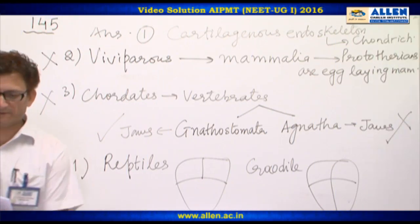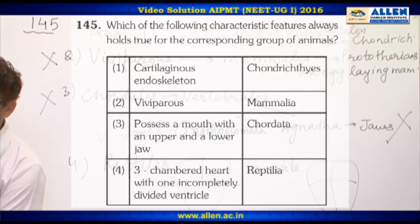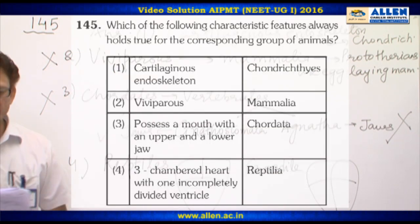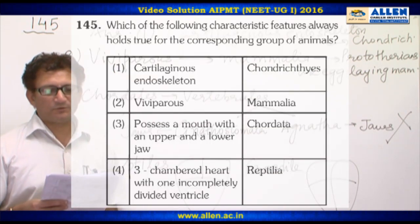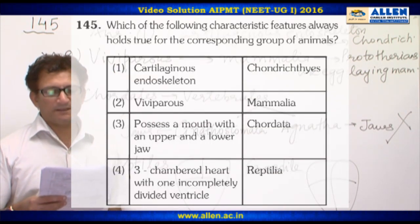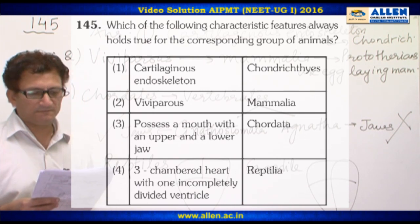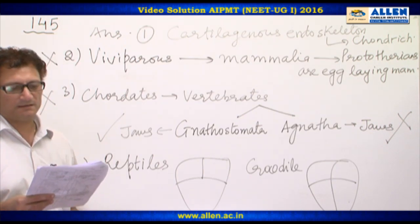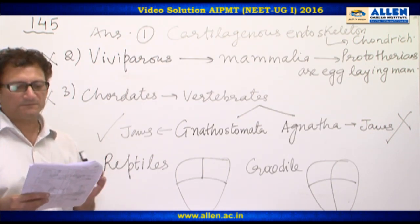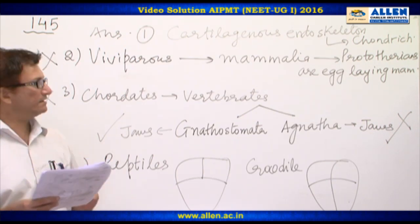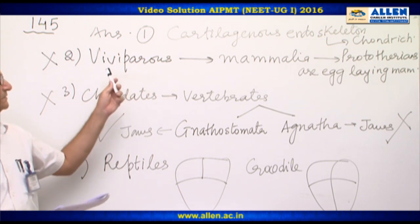Question number 145: which of the following characteristic features always hold true for the corresponding group of animals? Option one: cartilaginous endoskeleton in Chondrichthyes. Option two: viviparous in Mammalia.